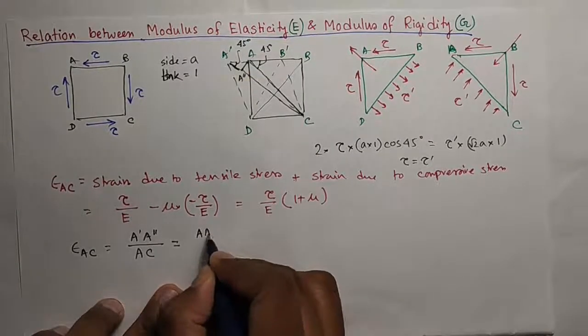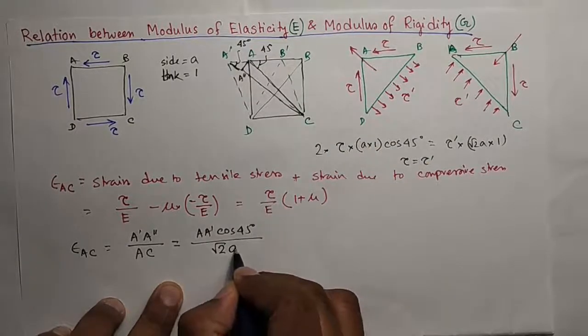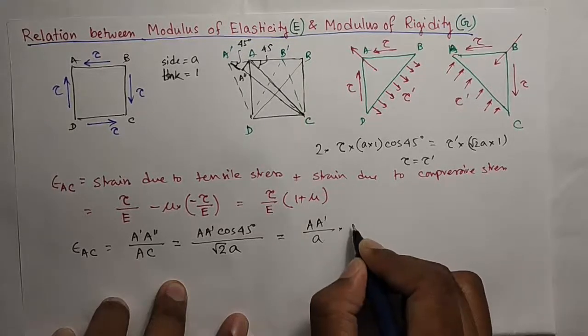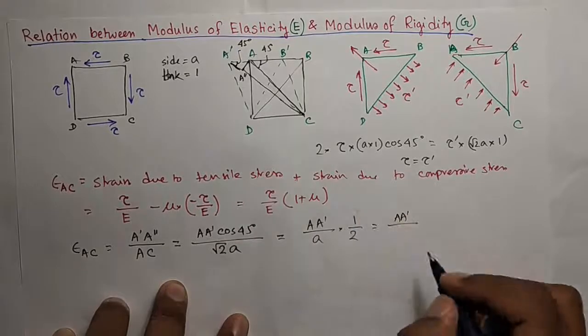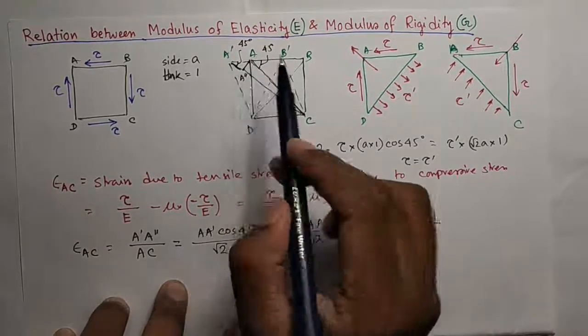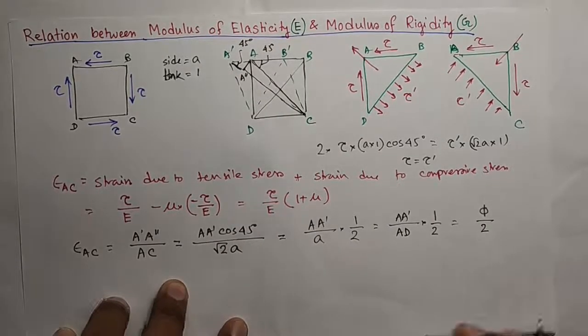So, you can write here A A dash was 45 degree and this AC is the diagonal root 2 A. You get A A dash by A A into 1 by 2. So, A A dash by A you can write A equal to AD 1 by 2. So, A A dash by AD is nothing but the shear strain Phi. So, you can write Phi by 2. So, you can now equate these two.